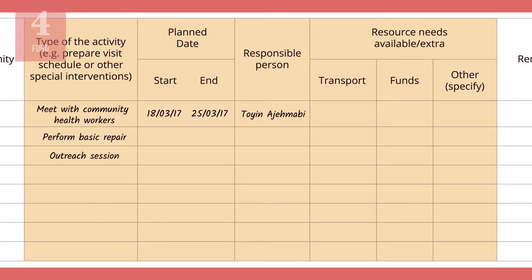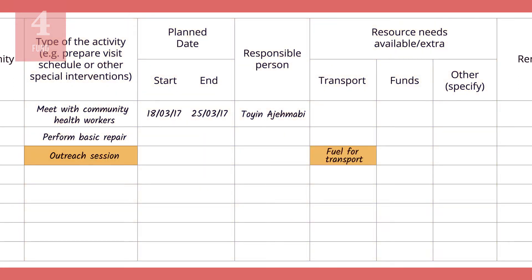For example, for an additional outreach session, you may need transportation or funding for transport, a per diem for one day, and supplies such as vaccines, diluents, syringes, a safety box, posters, pamphlets, tally sheets, vaccination cards, and immunization registers.